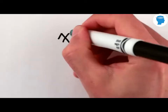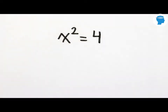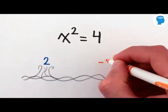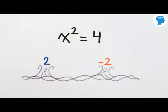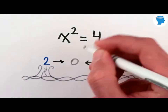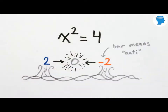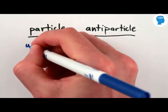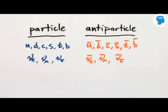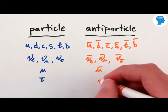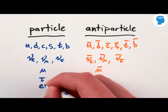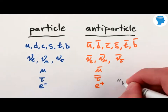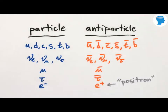Which is pretty much exactly like how the equation x squared equals 4 has two solutions — 2 and minus 2 — with the same value but opposite sign, and when they meet, they annihilate. Every fundamental particle has an antiparticle. There are anti-quarks, anti-neutrinos, anti-muons, anti-tauons, and of course anti-electrons, though we call them positrons.